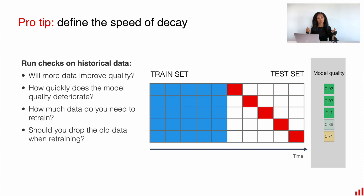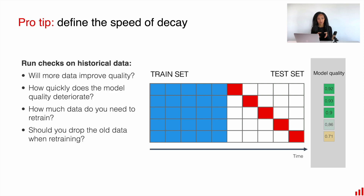Let me give you some more details. For instance, you can fix the training set from your historical data and train a model on top of this training dataset. Then you can start applying this trained model to the next batches of data — still from the historical part, but more fresh compared to your training data. You apply this model to new batches with a certain step, like daily, weekly, or monthly, and measure model quality.